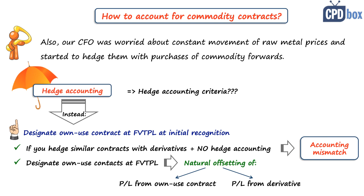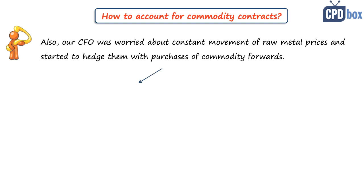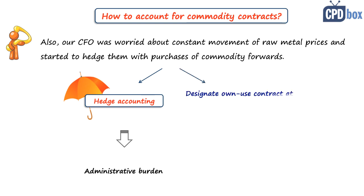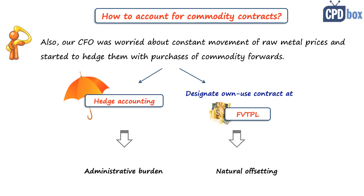To sum it up: if you want to hedge the price risk in your own-use contracts you have two options. Number one, you apply hedge accounting, but in this case there's an additional administrative burden. Number two, you designate the own-use contract at inception as at fair value through profit or loss, and the offset or hedging is reached naturally.